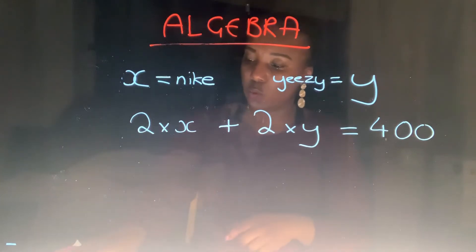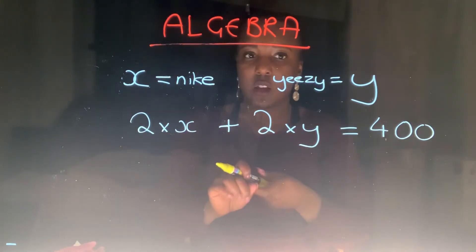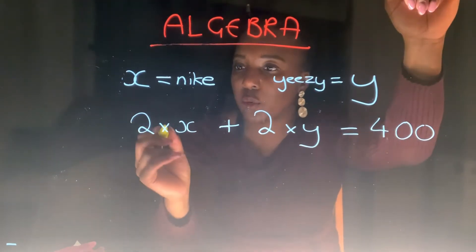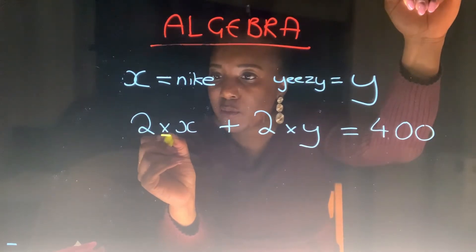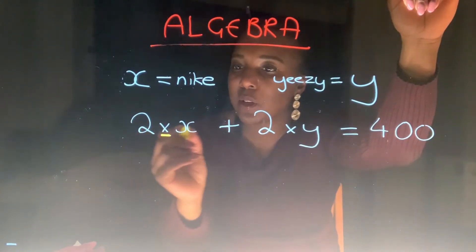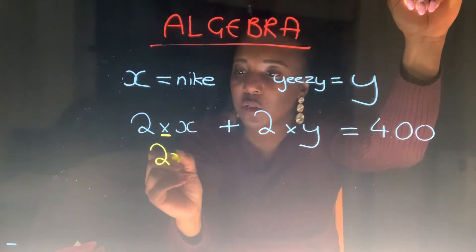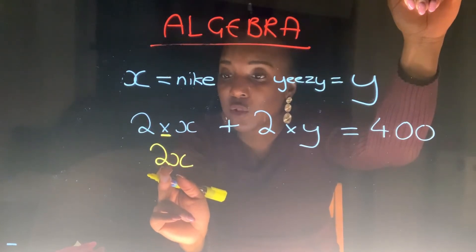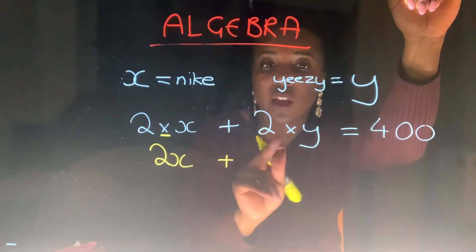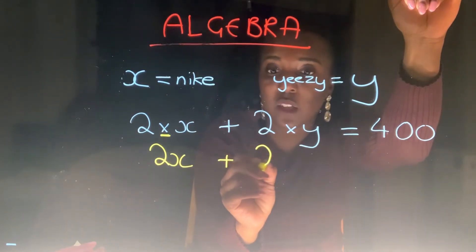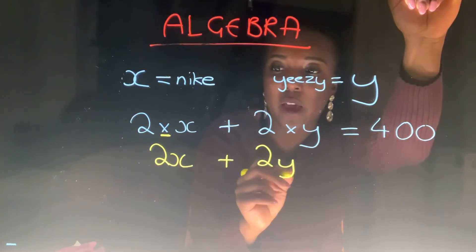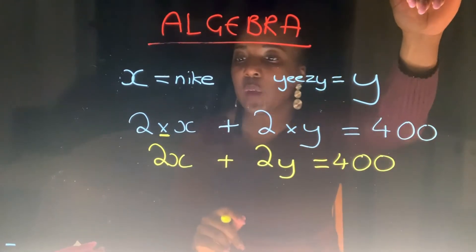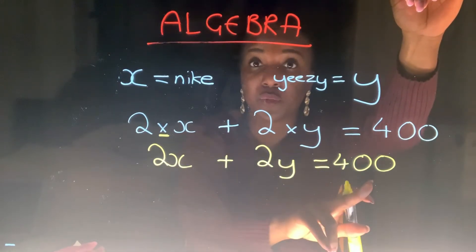So let's use another colour now to make this look like an actual equation. Instead of writing the multiplication out, in algebra we simply write these next to each other. So 2X — when you multiply a number by a variable, it becomes two times the value — and we're going to do the same thing here: 2Y. And what does that equal? 400. So, 2X plus 2Y is equal to 400.